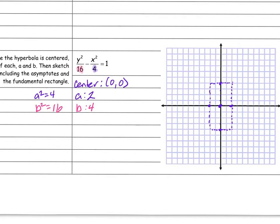Now I'm going to draw my asymptotes — a dotted line. I'm going to try and draw a straight line through the center and the corners of the rectangle. It would be so much easier with a ruler, but we're making do. There we go — those are my asymptotes.